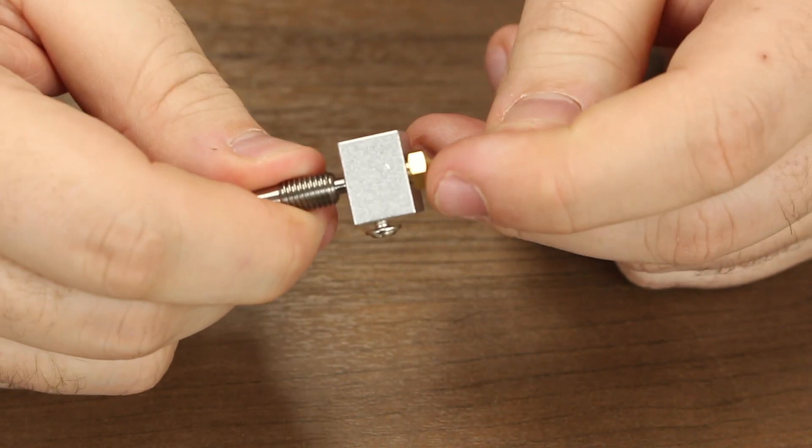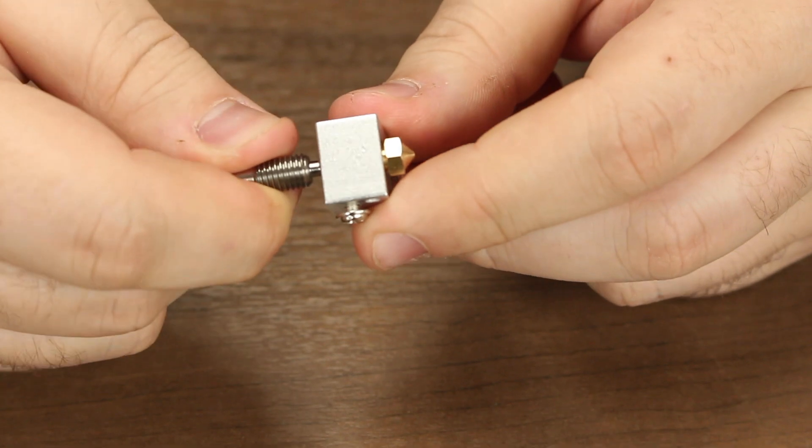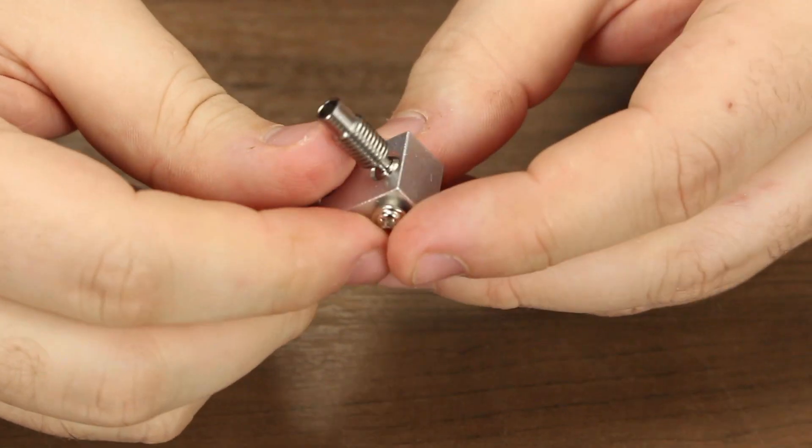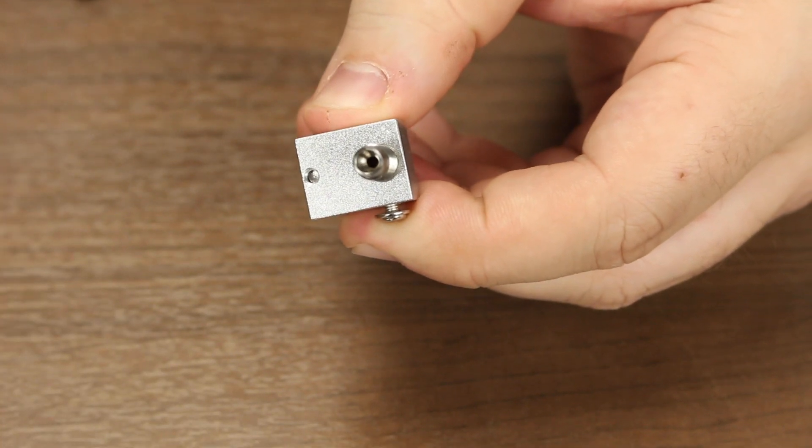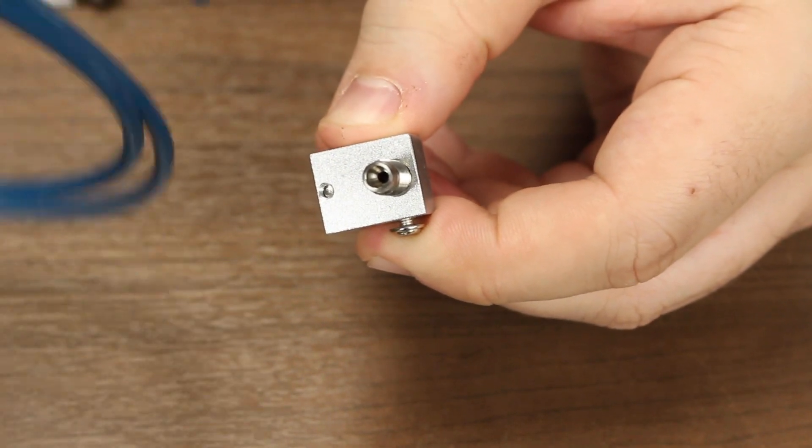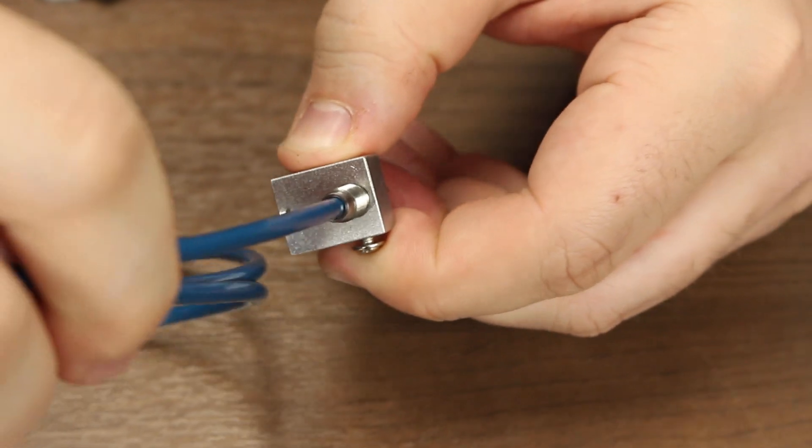Now when we finally go to tighten the nozzle on, we'll have a nice tight seal against the bottom of that heat break. As we discussed before, the E3D V6 style all metal heat breaks have a small cavity on the top that will accept a Bowden tube as a filament guide.